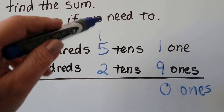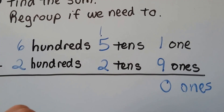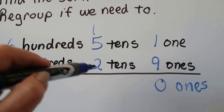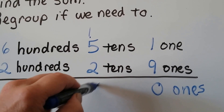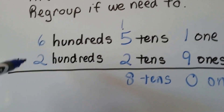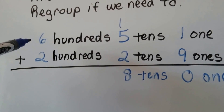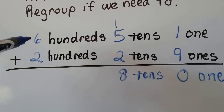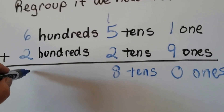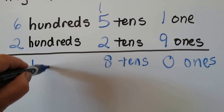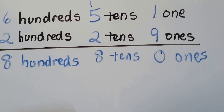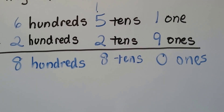Now we add the digits in the tens place. One and five is six, seven, eight — so we have eight tens. We add the hundreds place: six plus two is eight. So we have eight hundreds, eight tens, and zero ones.